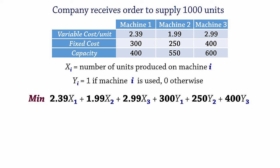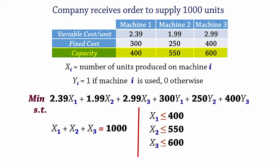For the constraints, we have an order here to supply 1000 units. So we write, x1 plus x2 plus x3 equals 1000. Equality is used here because we have to meet the order or demand placed by the customer. Now for the capacities, normally we just write, x1 less than or equal to 400, x2 less than or equal to 550, and x3 less than or equal to 600.